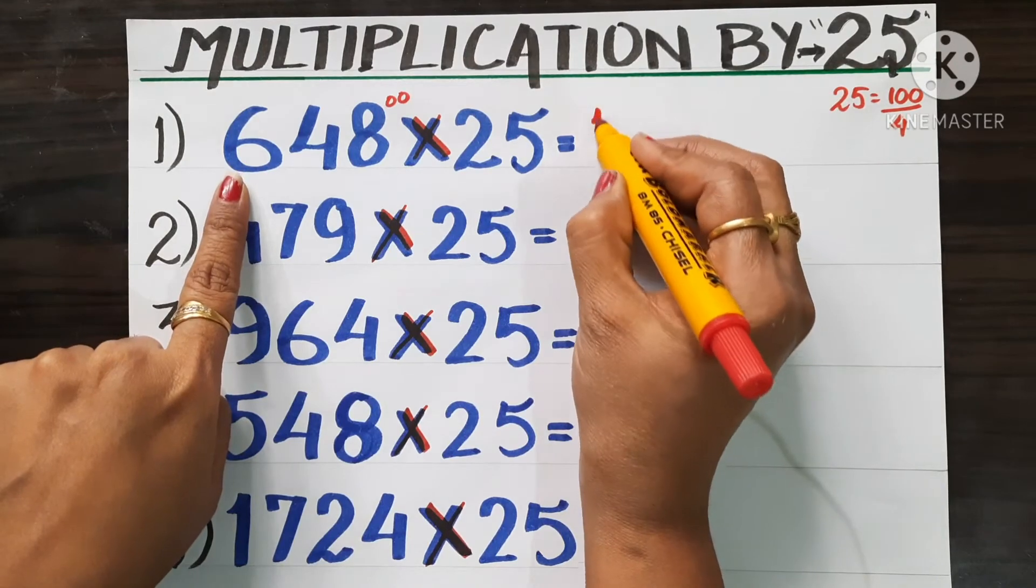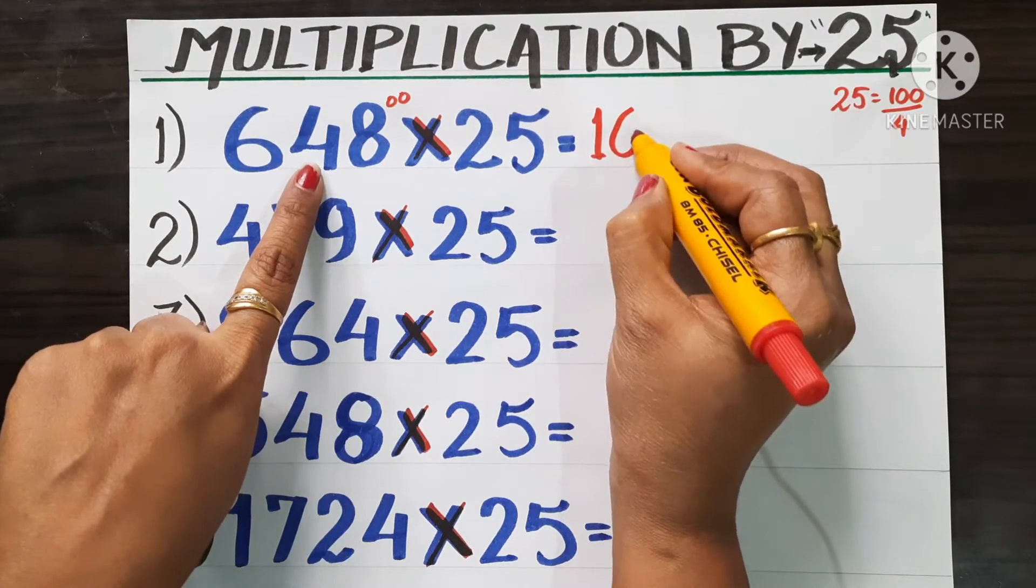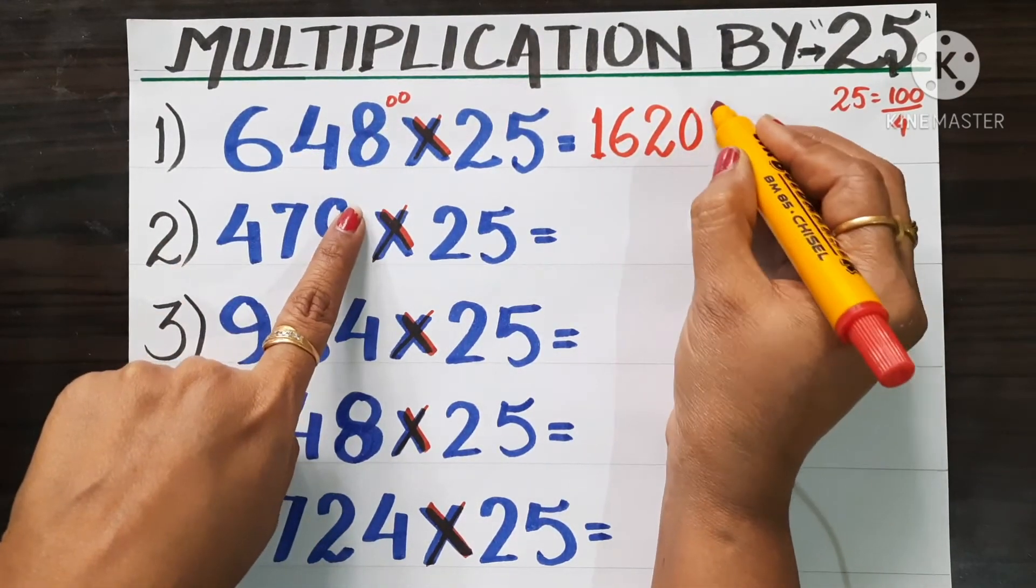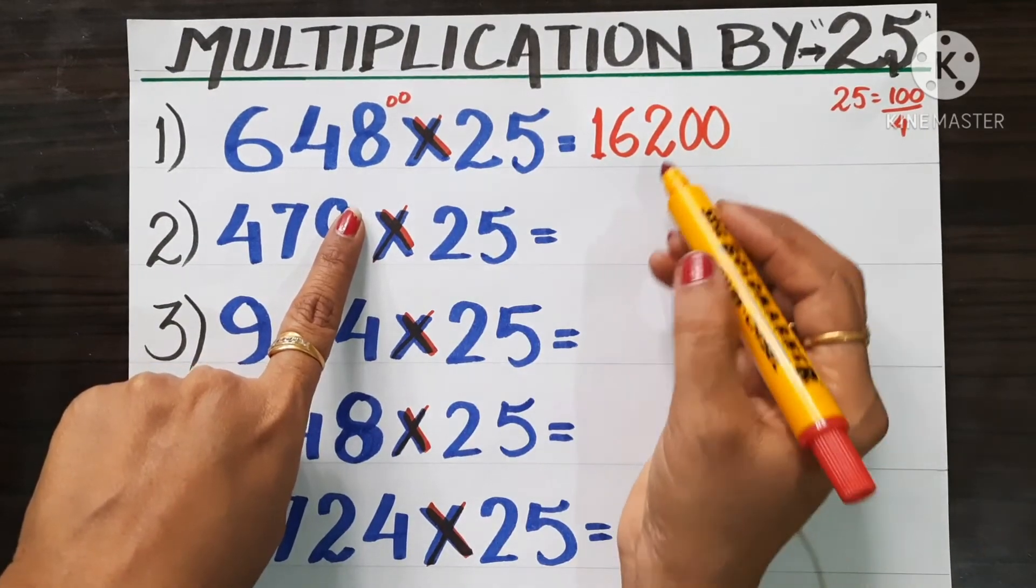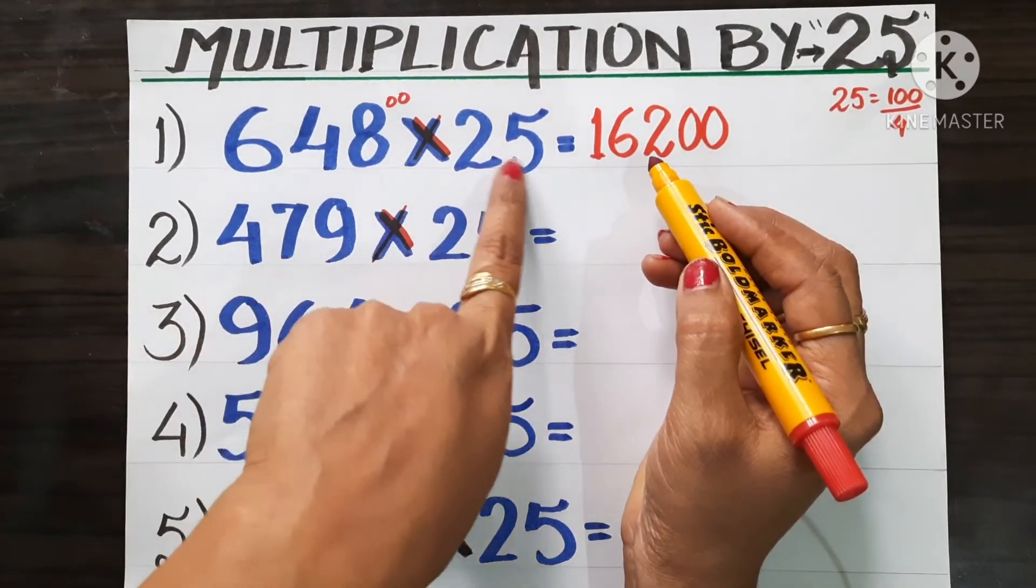4 twos are 8, and 2 zeros are there, so we have to write these two zeros. This is your answer of multiplication: 648 multiplied by 25. Again, let's put two zeros here because it's 100, and divide by 4.